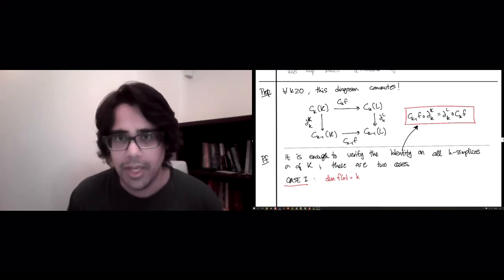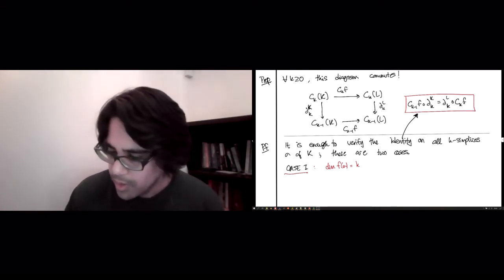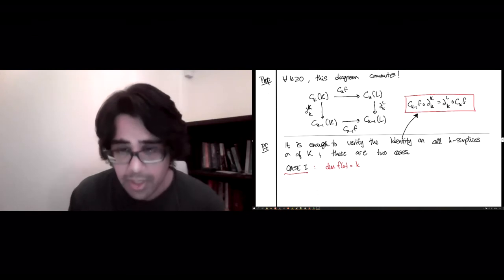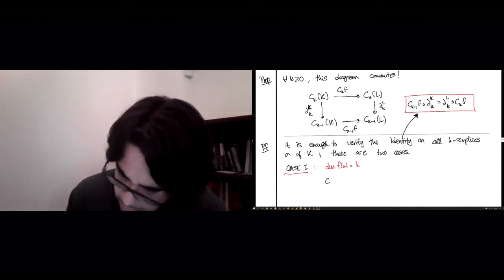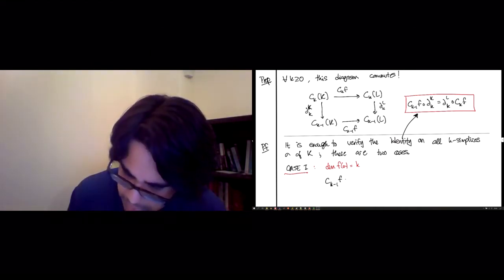Or maybe I would actually recommend that you try to work it out on your own without looking at anything and see how far you get. So here is the dimension f(σ) equals k case. You take one side, let's say the side that was presented to us.